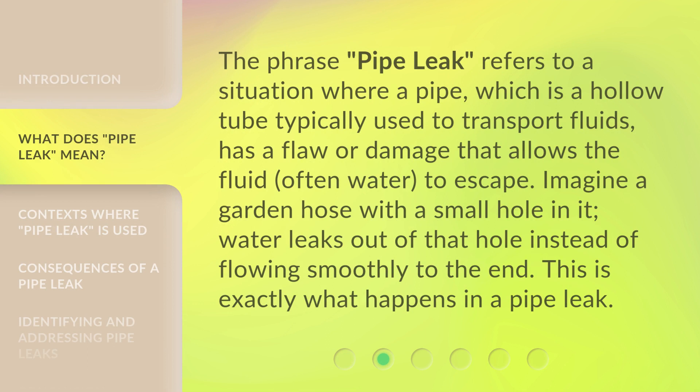The phrase Pipe Leak refers to a situation where a pipe, which is a hollow tube typically used to transport fluids, has a flaw or damage that allows the fluid, often water, to escape. Imagine a garden hose with a small hole in it. Water leaks out of that hole instead of flowing smoothly to the end. This is exactly what happens in a pipe leak.